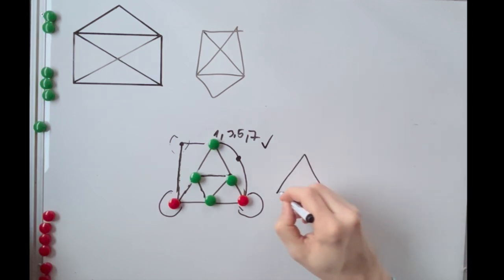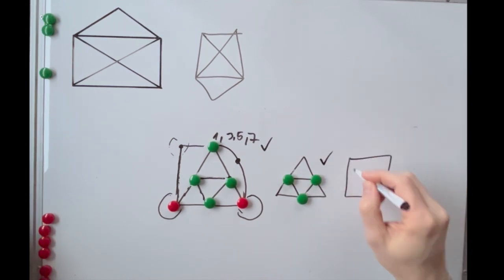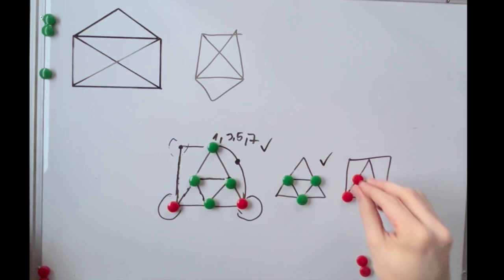If the shape has no odd nodes, it can be started from any point and is also a unicursal shape. But if it has four or more of those odd nodes, it's impossible to draw the shape this way.